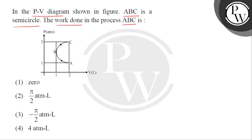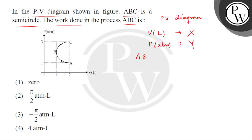So children, here we have a PV diagram which clearly shows that volume in litres is on the x-axis and pressure in atmospheric pressure is on the y-axis. We have to find the work done in the ABC process from the 4 given options.